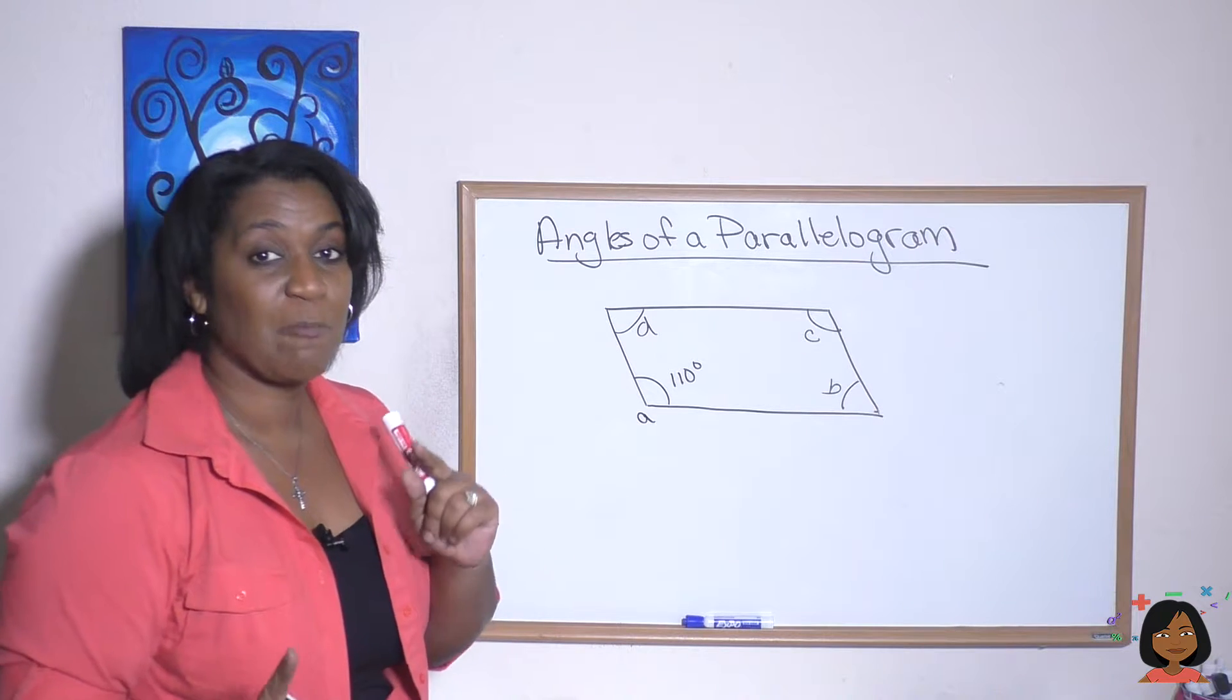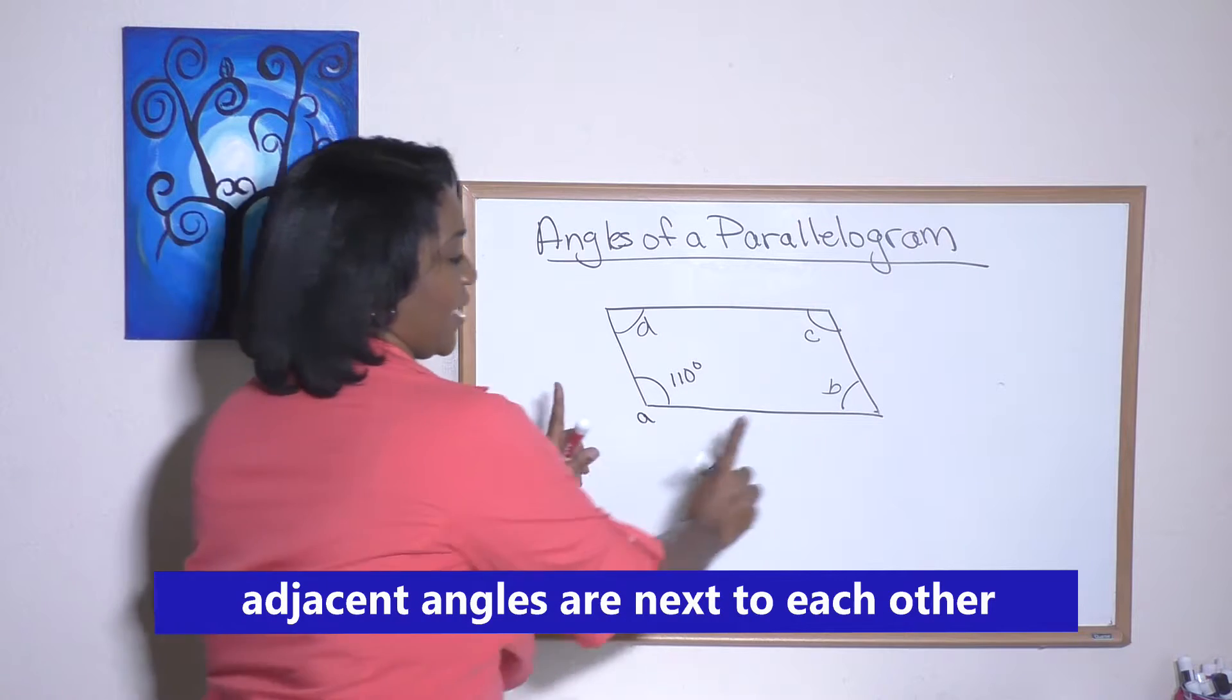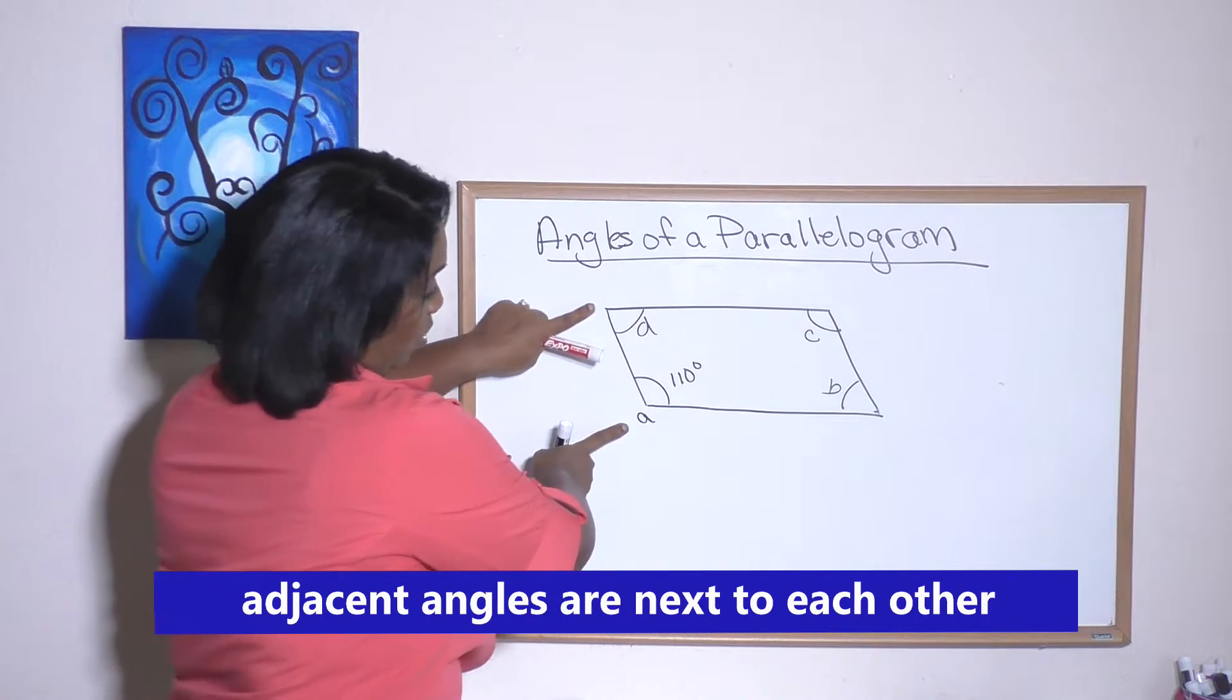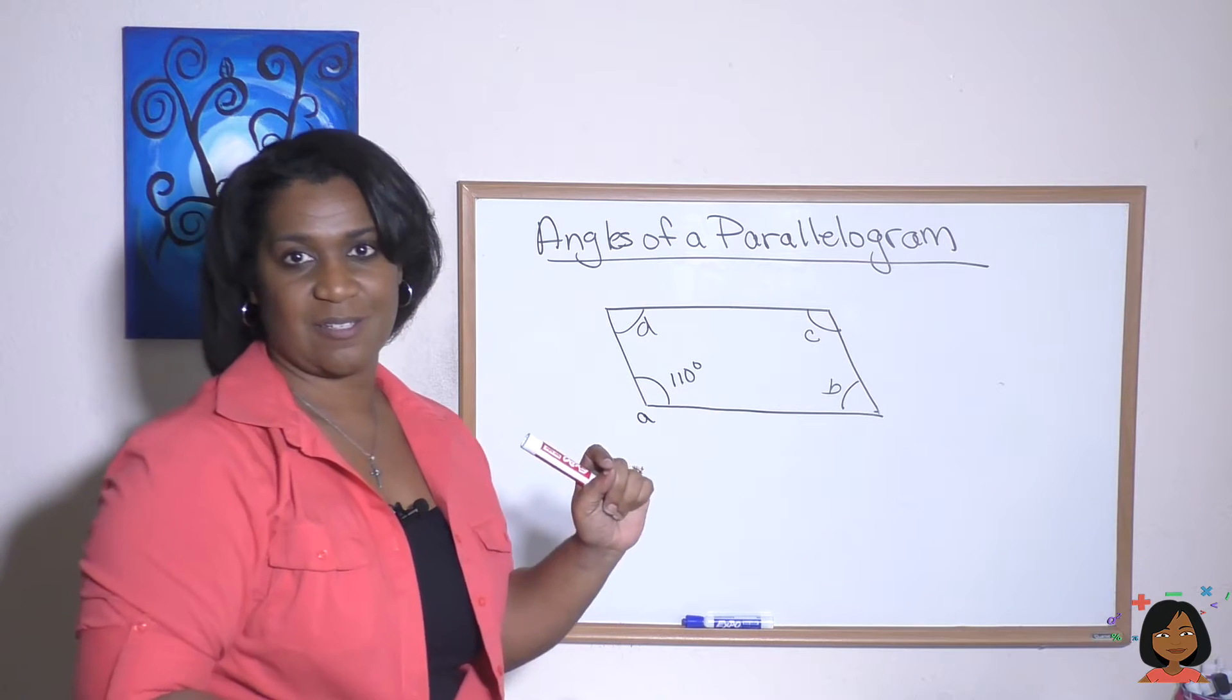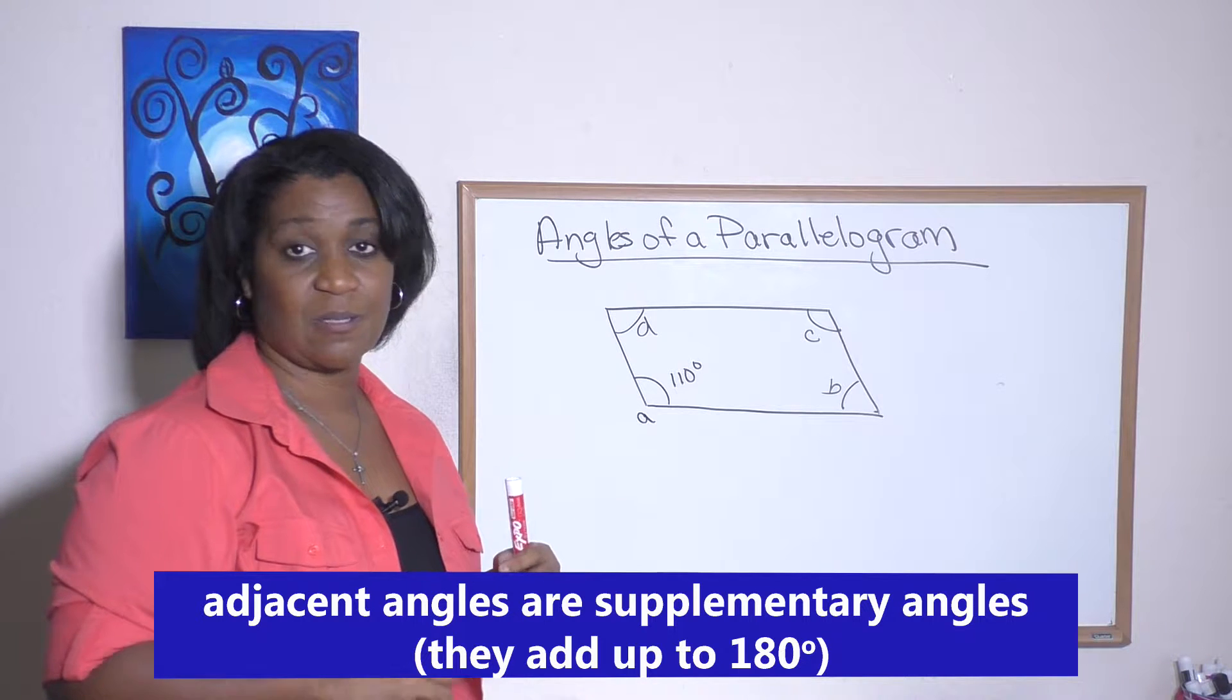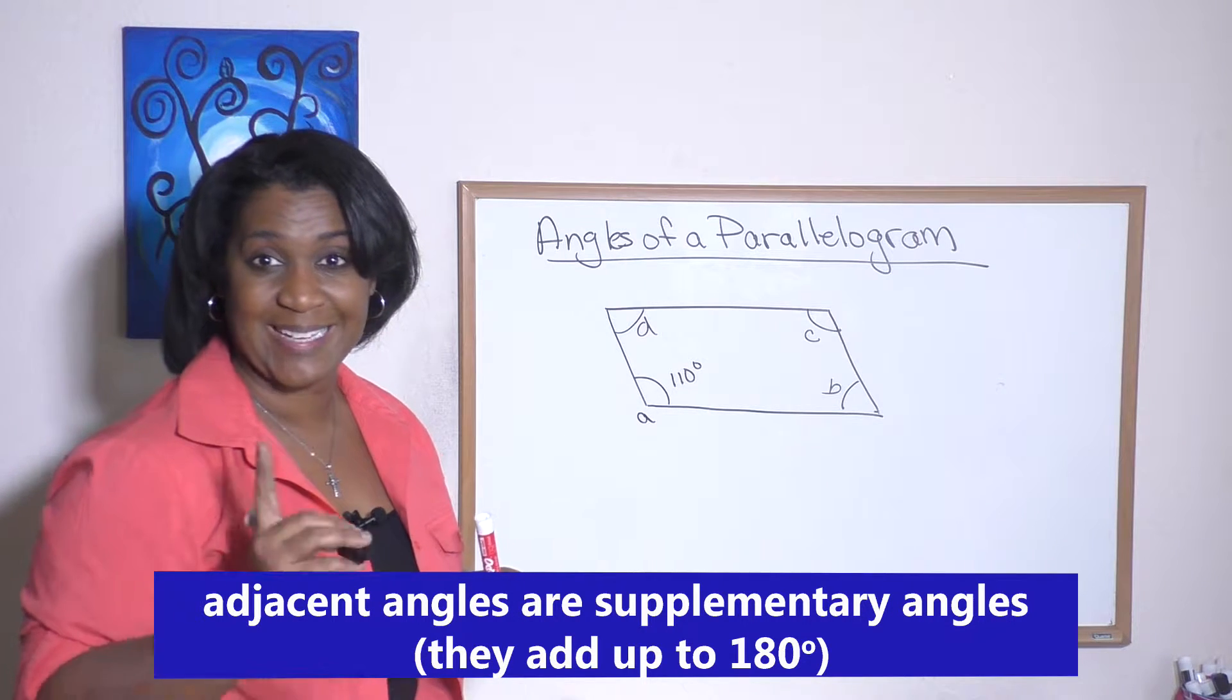Well, you might remember way back when we learned something called adjacent angles. Adjacent angles are angles that are next to each other. So A and B are adjacent and also A and D are adjacent. Adjacent angles are also supplementary angles. Supplementary angles are angles that add up to 180 degrees.